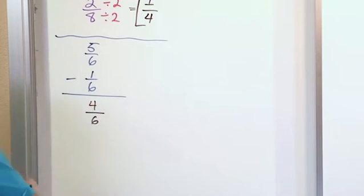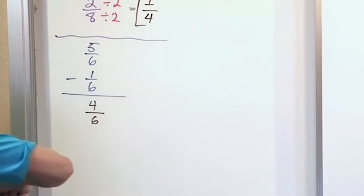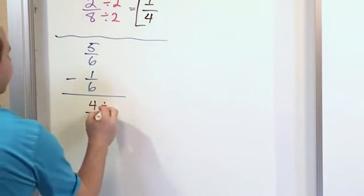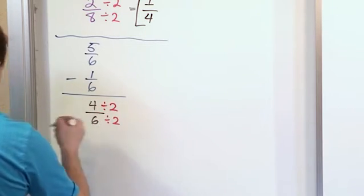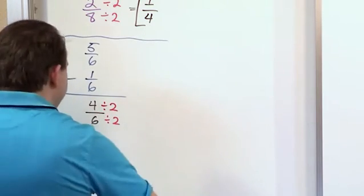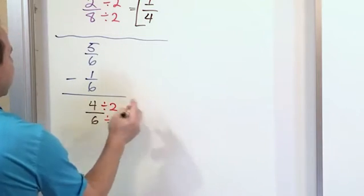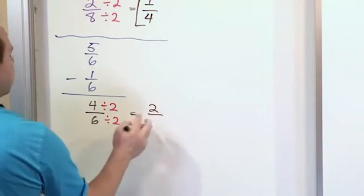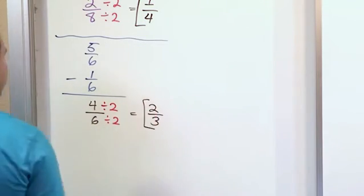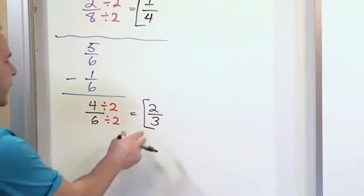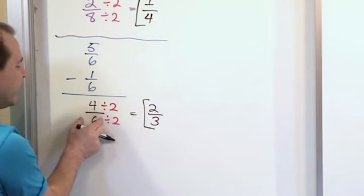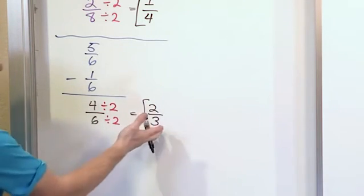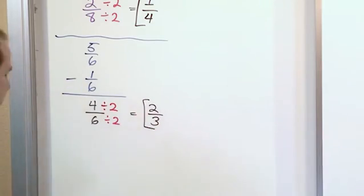Now we could circle this, but then we look and see is this simplified and we notice right away that I can divide the top by 2 and the bottom by 2. And when I do that I'm going to end up getting 4 divided by 2 is 2, 6 divided by 2 is 3. So the answer you would circle is 2/3. It represents the same thing that 4/6 represents but it just looks a little simpler so we always do that when we solve our problems.